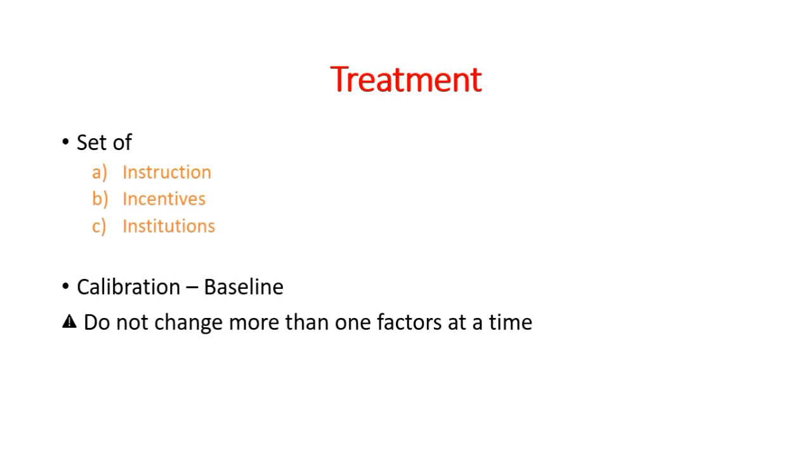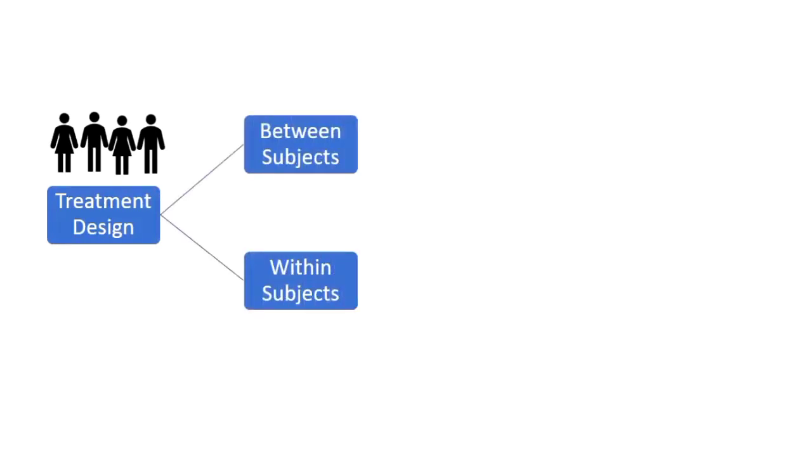Now, let's elaborate more about treatment. Treatment may be a set of instructions, incentives or institutions that create a difference for some participants in an experiment and influence their choice or actions. To see what difference created by the treatment, it must be compared with baseline or status quo situation. It is strongly recommended that you should not take more than one factor at a time. Now, the question is how to design the treatment. There are two ways of doing it, called between subjects and within subjects.